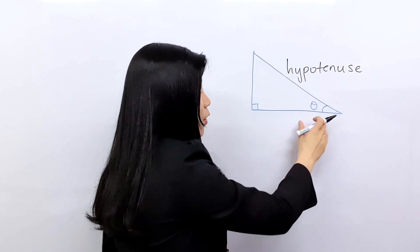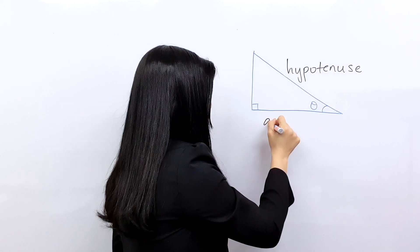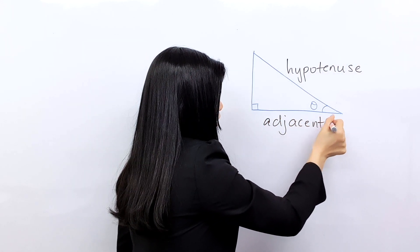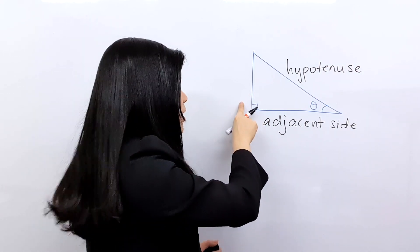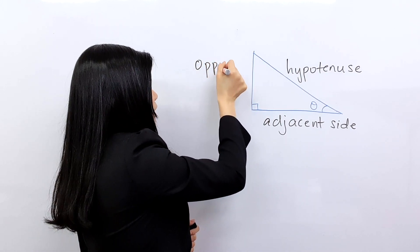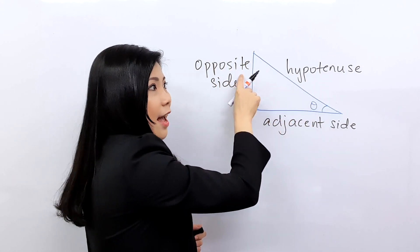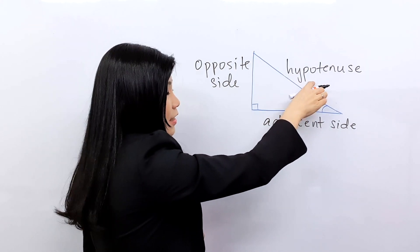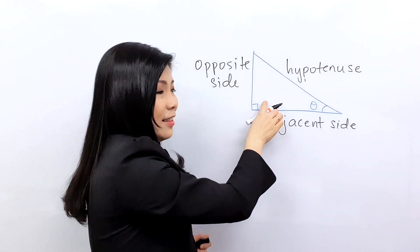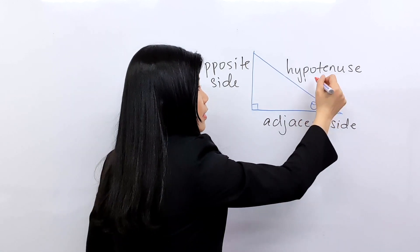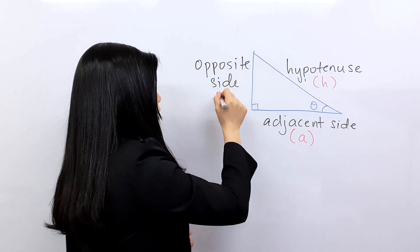This side is called the adjacent side — the side which is next to the angle. And then there's one more side which is the opposite side — the side that is opposite the angle. The hypotenuse is the longer side and also it's opposite the right angle. In short form I'm going to label the hypotenuse as H, the adjacent as A, and the opposite side as O.